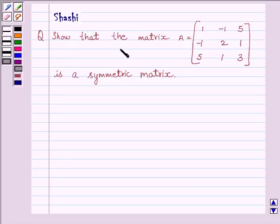Question is, show that the matrix A equals [1, -1, 5; -1, 2, 1; 5, 1, 3] is a symmetric matrix.